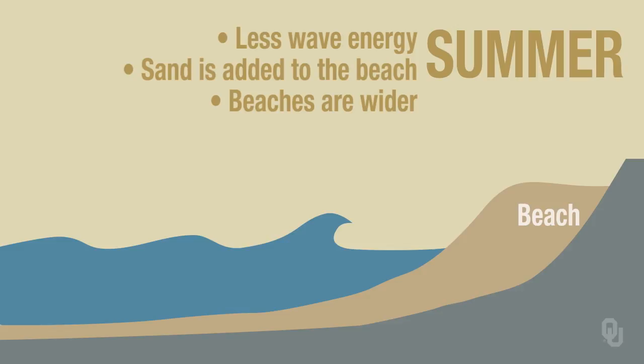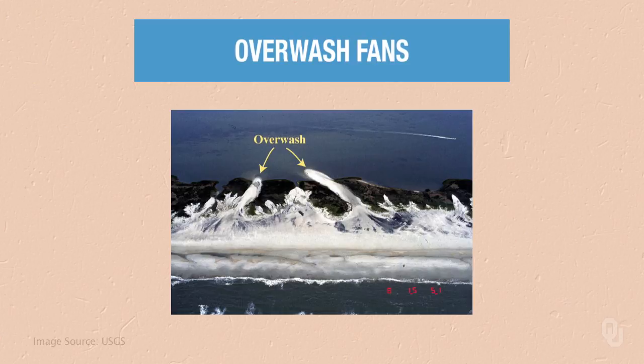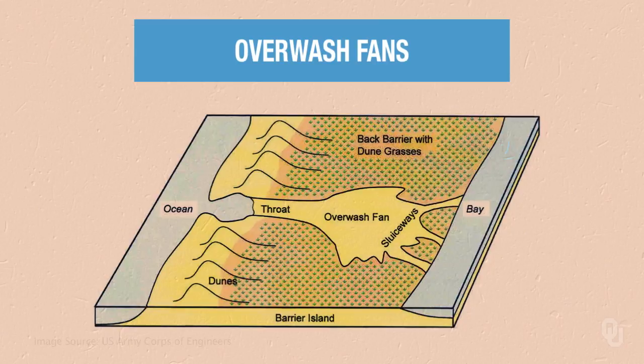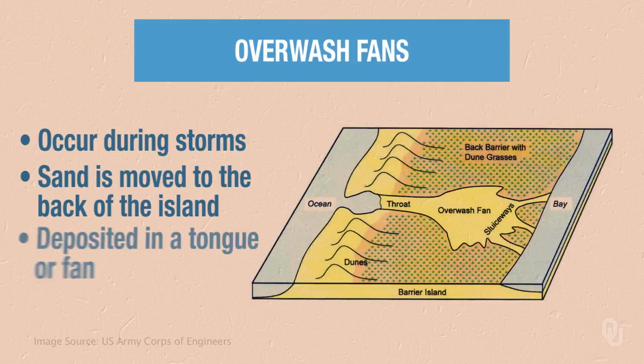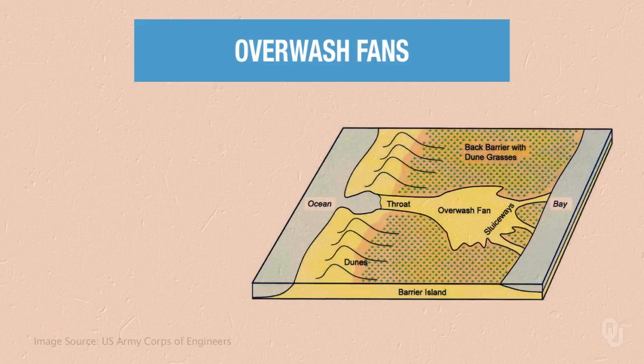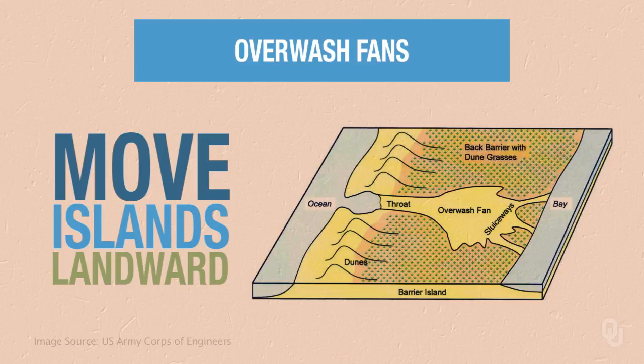The fourth process is a very important one — it's called overwash fans. You can see some overwash fans in the top photograph: those fan-shaped bodies that extend from the beach to the back part of the barrier island. The diagram below shows a schematic of what one of these overwash fans looks like. They occur during storms, and what happens is that sand is moved from the beach to the back part of the barrier island, depositing the sand as a tongue or fan. The reason these are important is that they move islands landward as sea level rises, causing the islands to migrate landward.